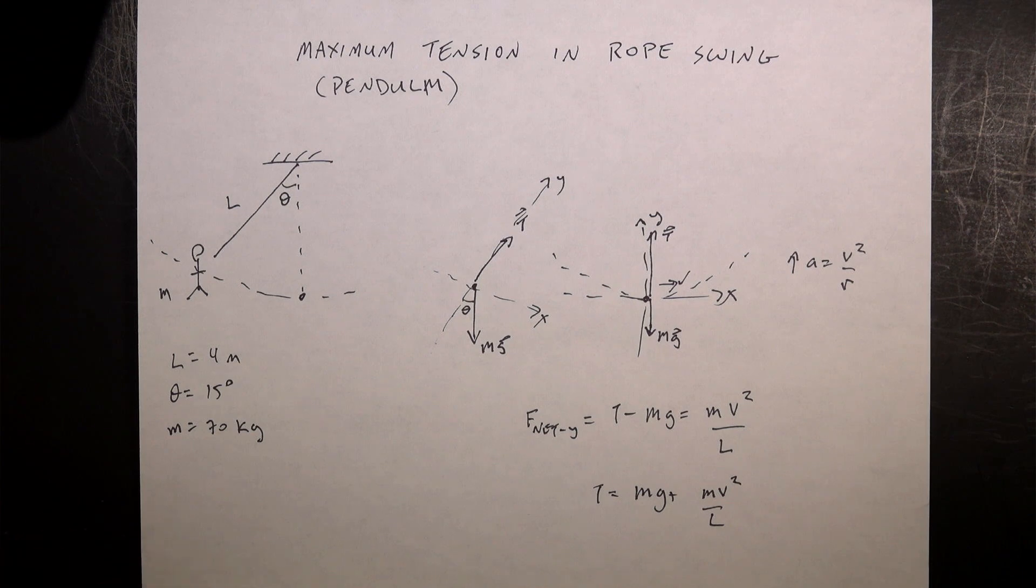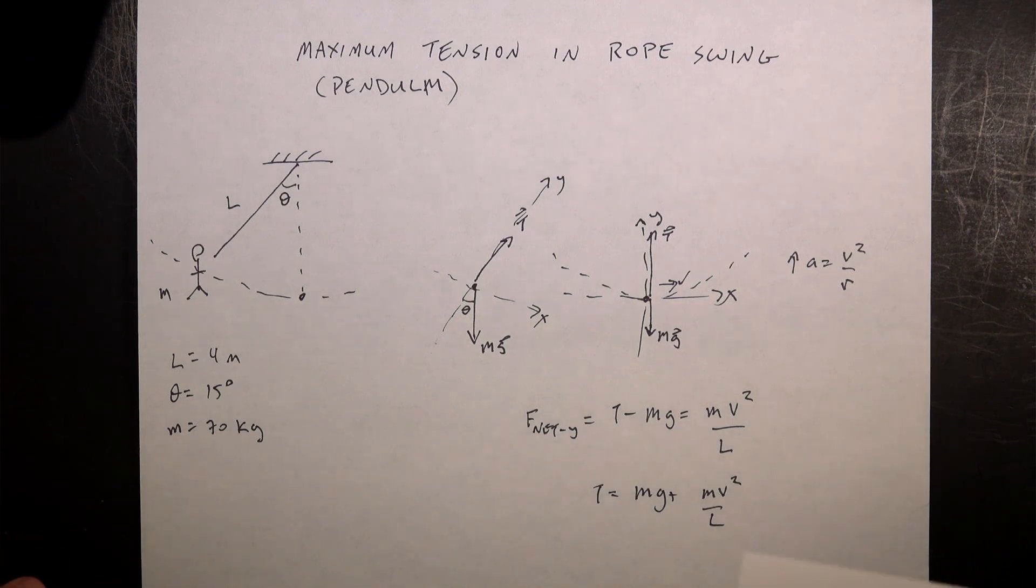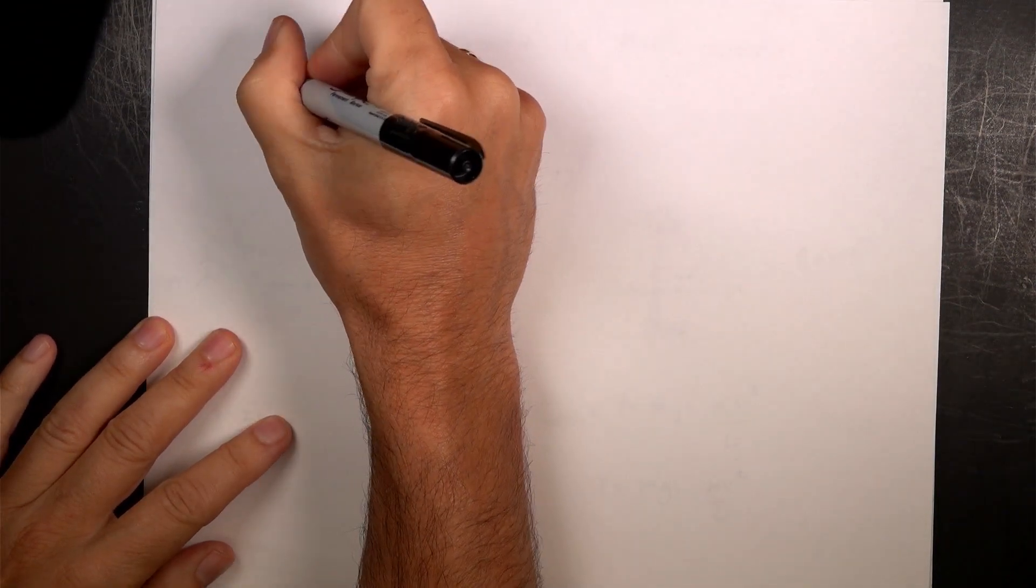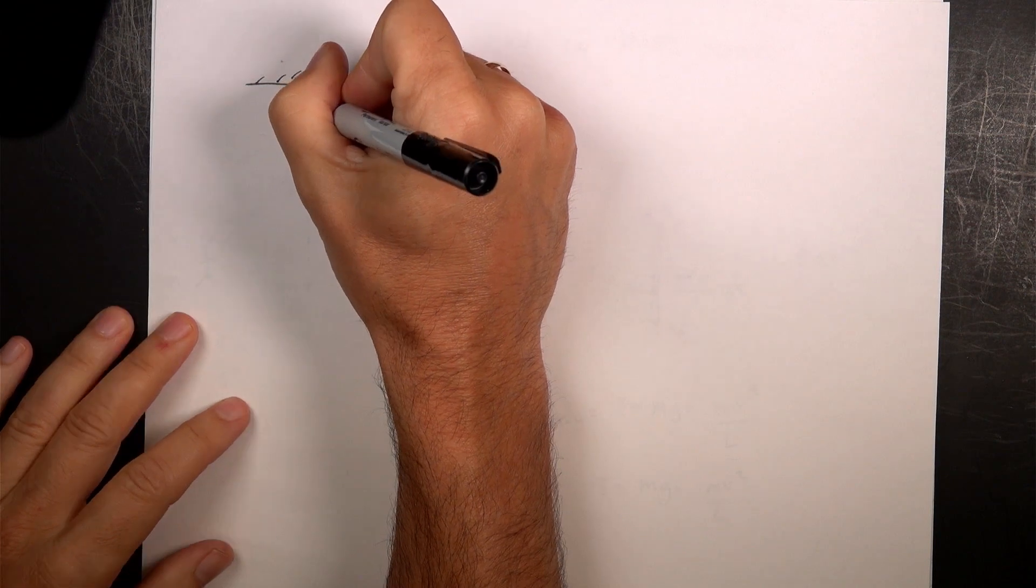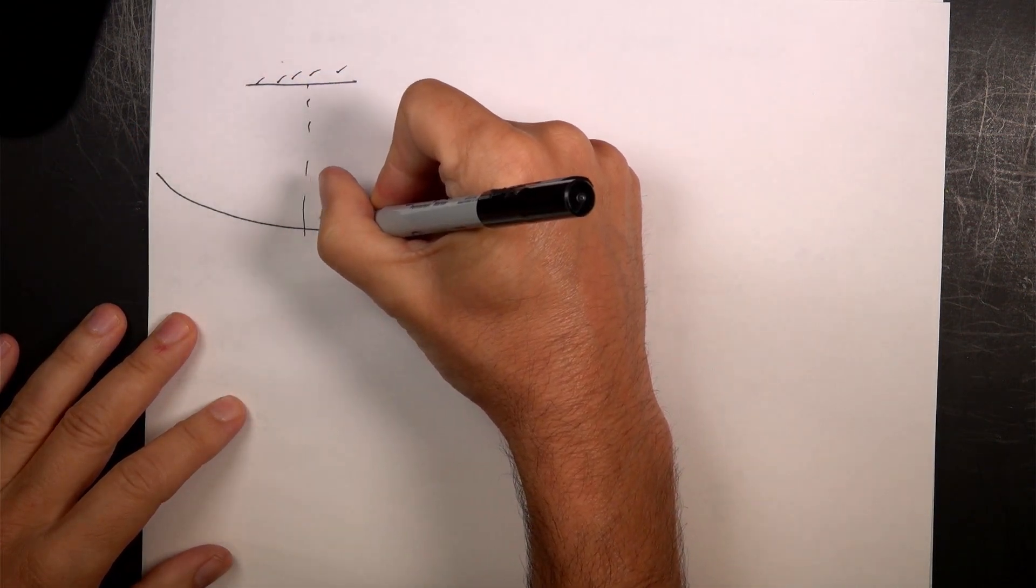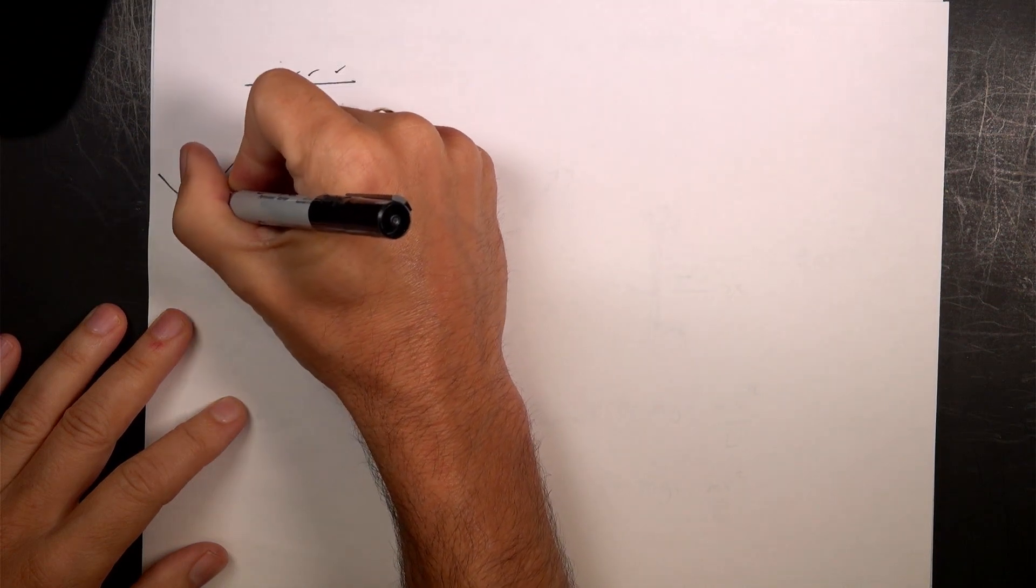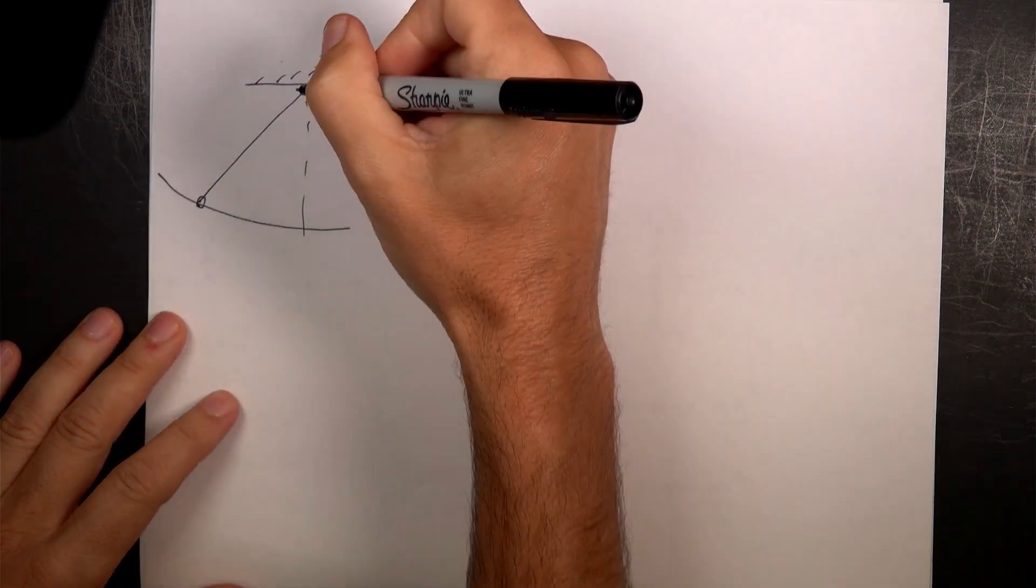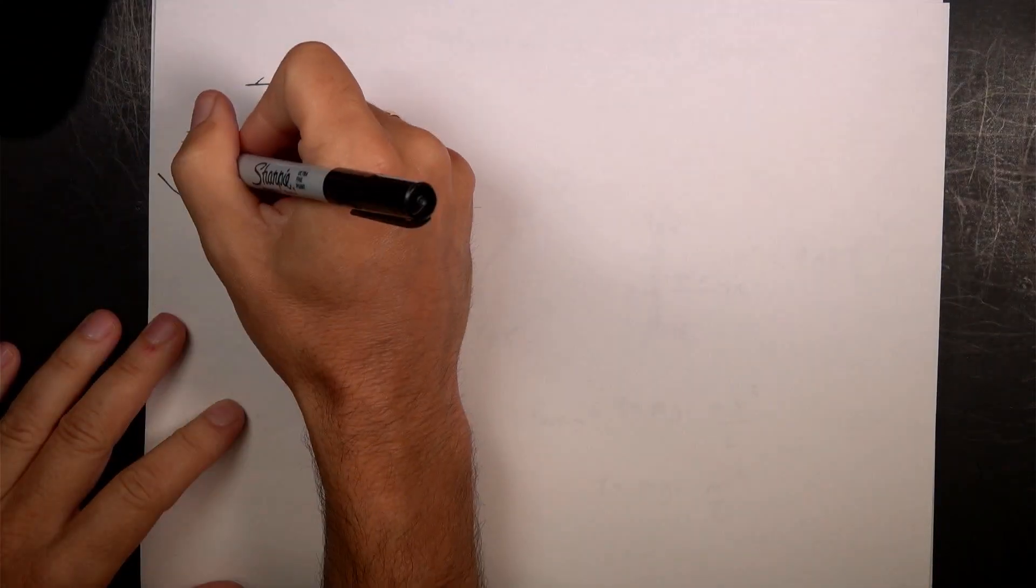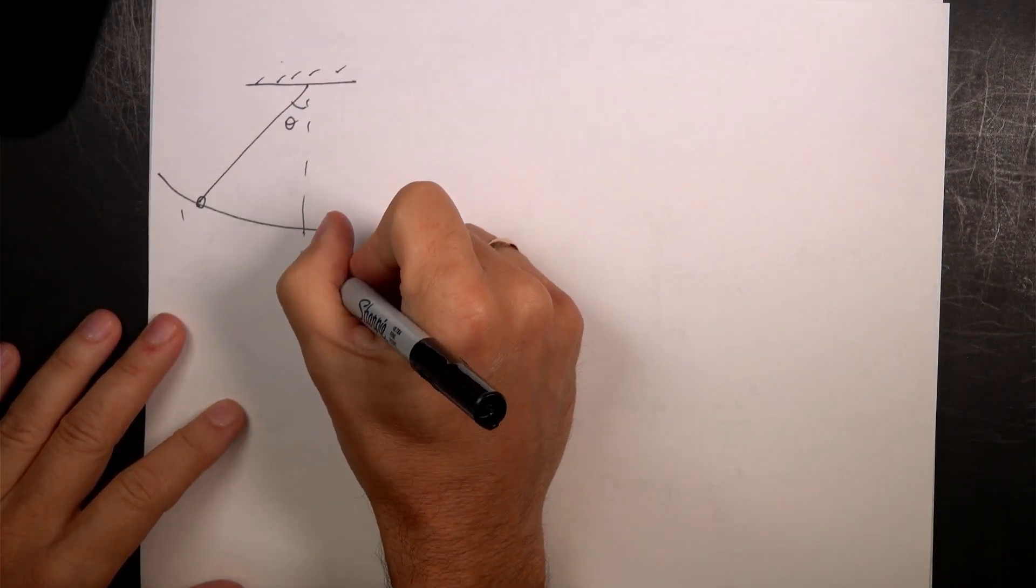So this is the part where we're going to use the work energy principle. So let me just redraw that picture. So here's our swing. Right there. And this starts off with an angle theta. And this is where we want to find the velocity at the bottom. So let's call this position one and this position two.